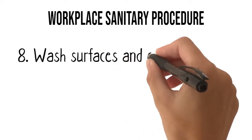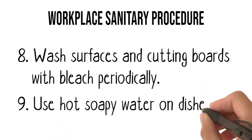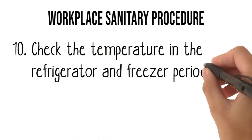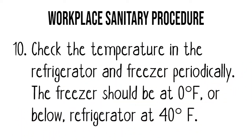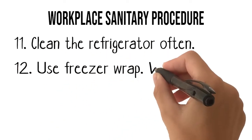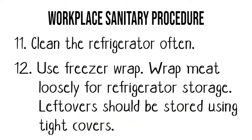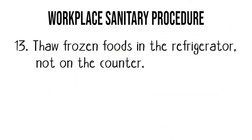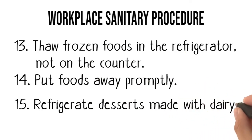8. Wash surfaces and cutting boards with bleach periodically. 9. Use hot, soapy water on dishes. 10. Check the temperature in the refrigerator and freezer periodically — the freezer should be at 0 degrees or below, and the refrigerator at 40 degrees Fahrenheit. 11. Clean the refrigerator often. 12. Use freezer wrap; wrap meat loosely for refrigerator storage, and store leftovers using tight covers. 13. Thaw frozen foods in the refrigerator, not on the counter. 14. Put foods away promptly. 15. Refrigerate desserts made with dairy products.